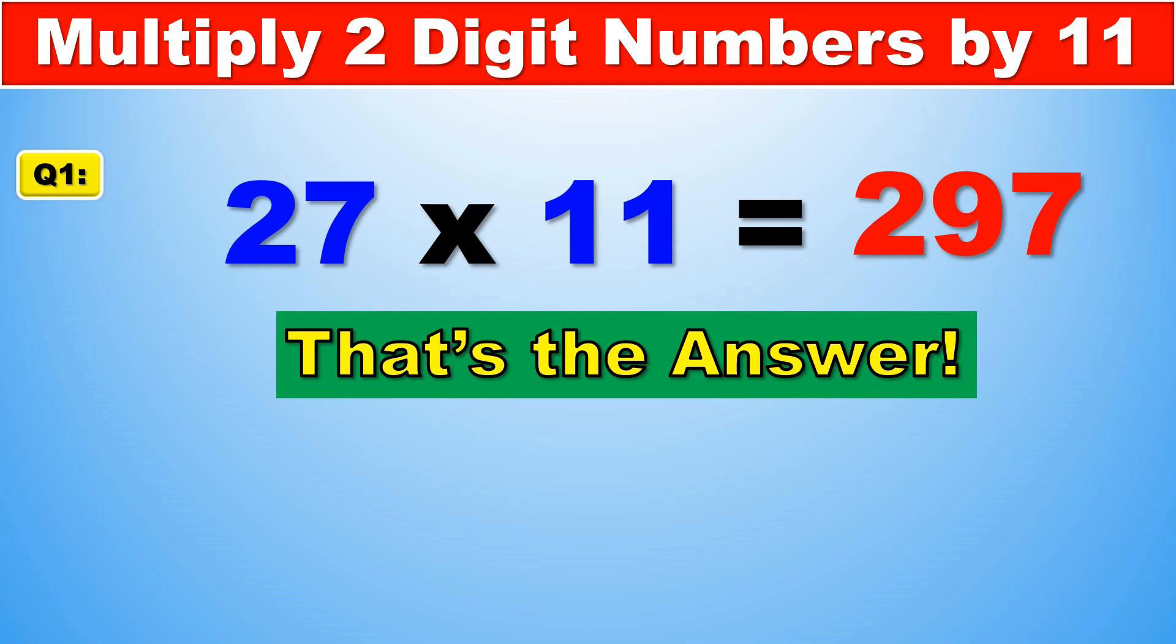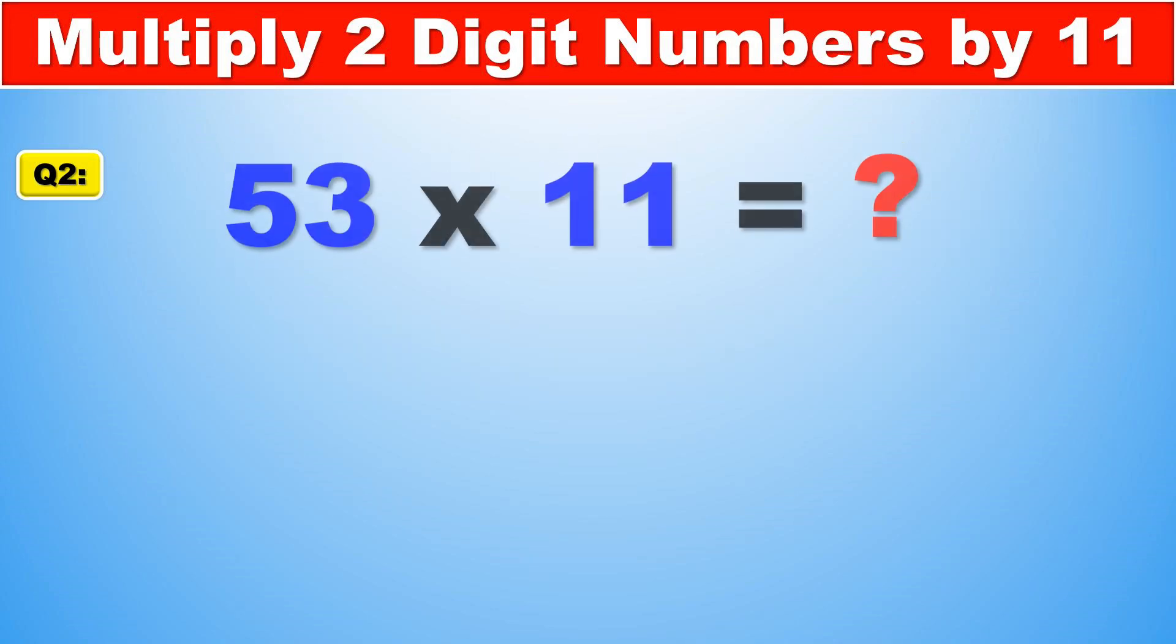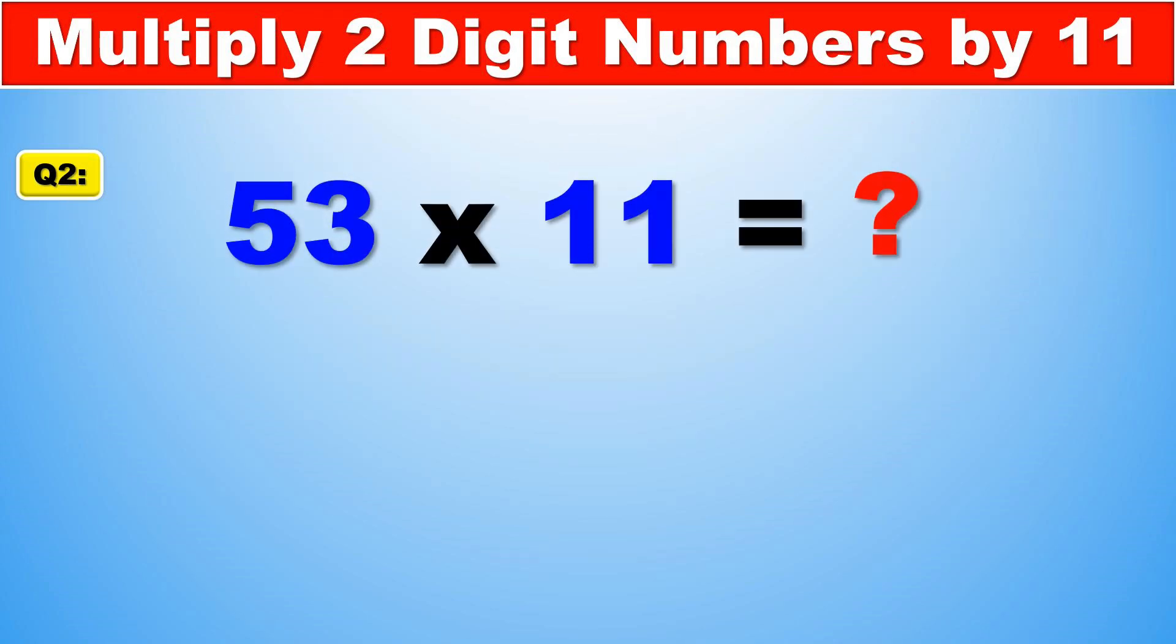Let's take a look at another example. 53 times 11. In this case, 5 is the first digit, so it goes at the beginning. 3 is the last digit, so it goes at the end. And the middle part is 5 plus 3, which is 8. And so that means 53 times 11 is 583.